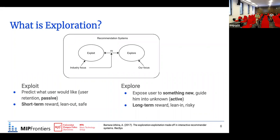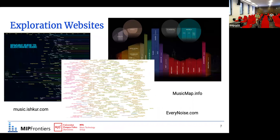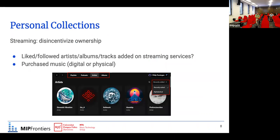If users find something completely new, like a new genre or artist they love, they would have a lot of content to listen to for quite a long time. The industry focuses a lot on proving exploitation because it is easier to measure and improve, and there is much less research on exploration. There are also a lot of third-party exploration websites, one of the earliest being the Ishkur's Guide to Electronic Music.